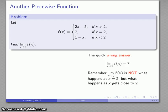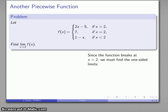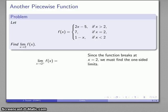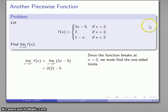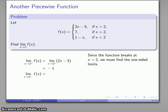Let's do this correctly. The function breaks at 2, so we find the one-sided limits. Starting with the limit as x gets close to 2 but always staying a little bit above it: if x is slightly more than 2, my function looks like 2x − 5. So that limit is the limit as x approaches 2 from above of 2x − 5, which gets close to 2(2) − 5 = −1.